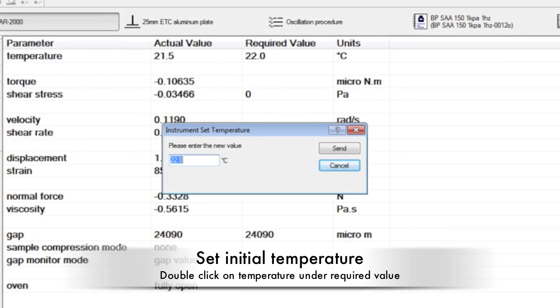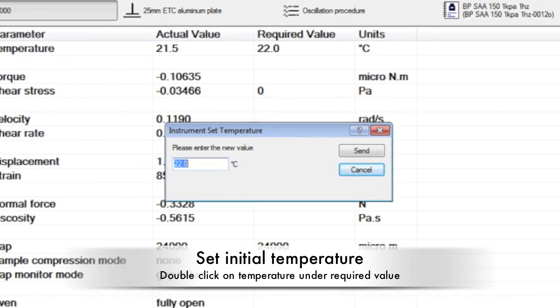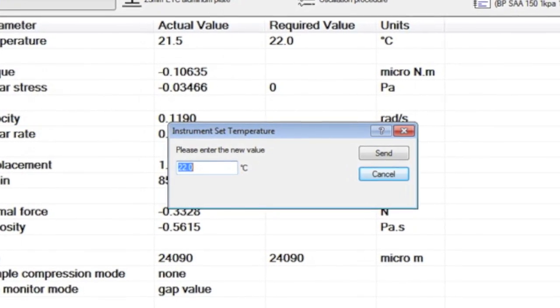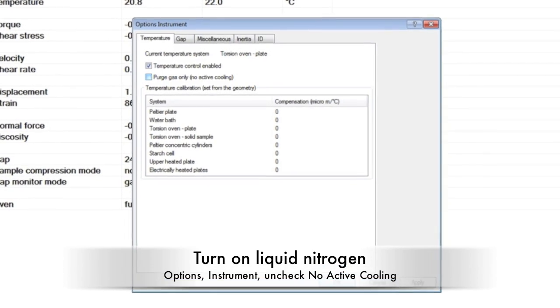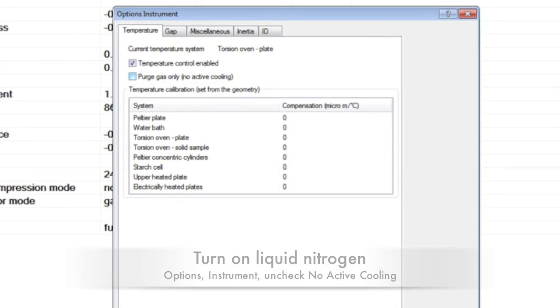Preset the test temperature by changing the temperature in the required value column. If the temperature needs to be colder, use the liquid nitrogen by clicking Options, Instrument, and unchecking the box No Active Cooling. Then click Apply.